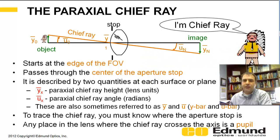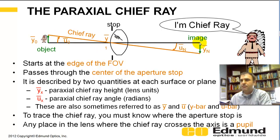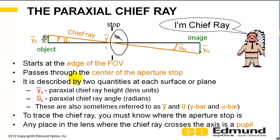The other ray is the paraxial chief ray. The analogy we like to use is a Native American chief with a headdress — I picture him at the object, and the chief ray begins at his headdress, goes through the aperture stop, and to where the image is, located by the marginal ray. The height of the chief ray at the image is the height of your image. Two quantities describe it: the ray height Y-bar, and the chief ray angle U-bar. Anywhere this crosses the axis is a pupil — we'll talk about stops, entrance pupils, and exit pupils in a later podcast.